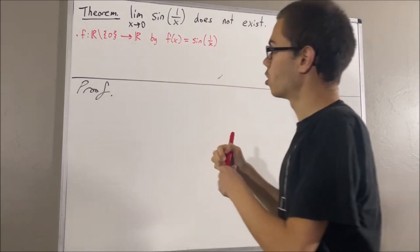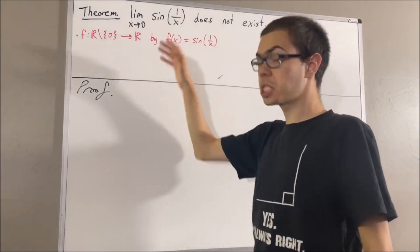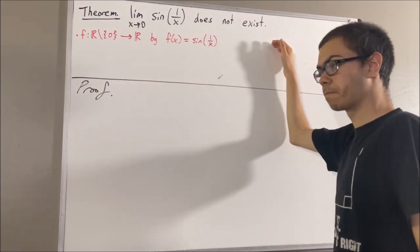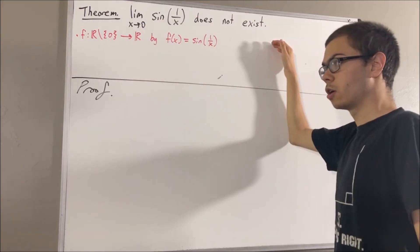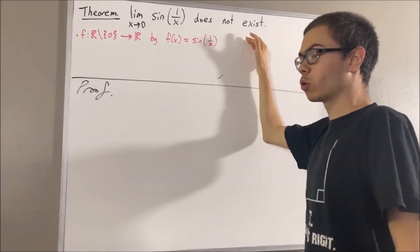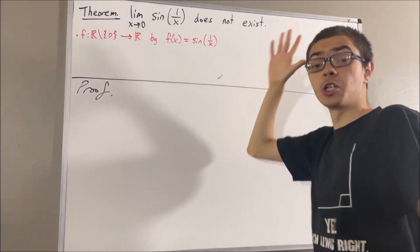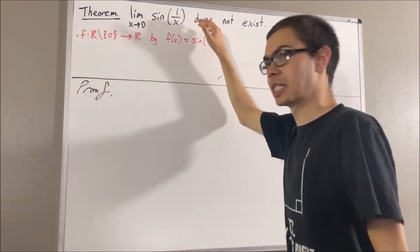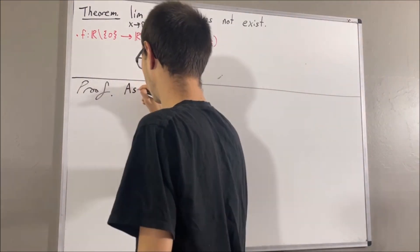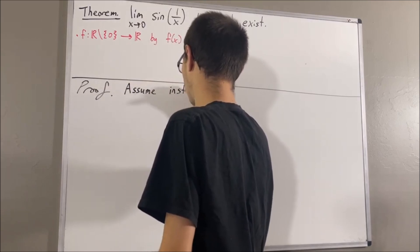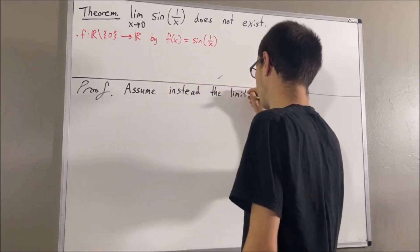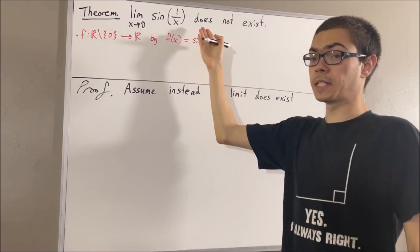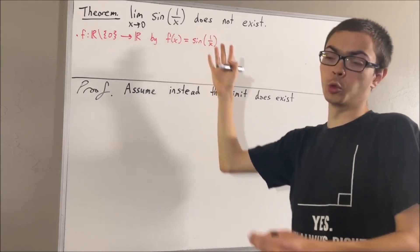We're trying to show that the limit of our function as x approaches zero does not exist. To prove that, we're going to assume for a contradiction that the limit instead does exist. We'll say that the limit is equal to L.